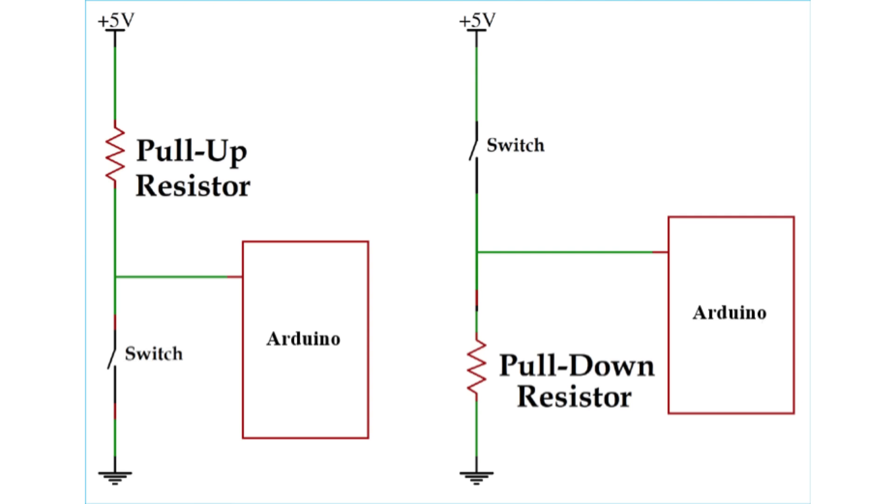With a pull-up resistor, the switch and the resistor have just swapped places, so when the button is pushed, the Arduino gets a low signal. And for the most part, that's all there is to it.